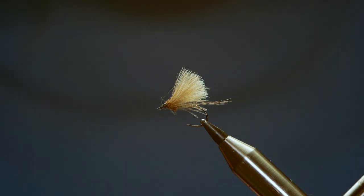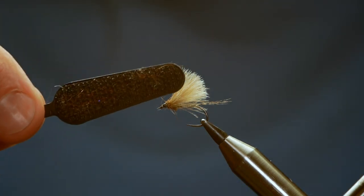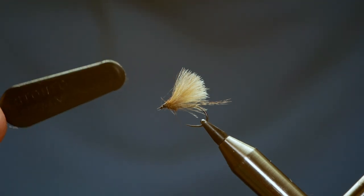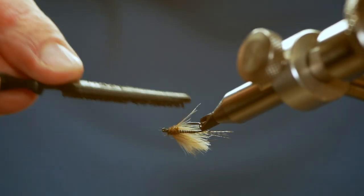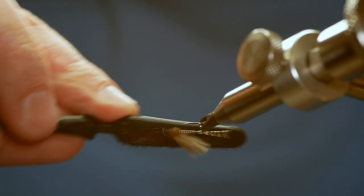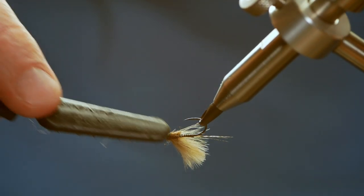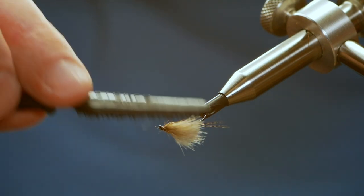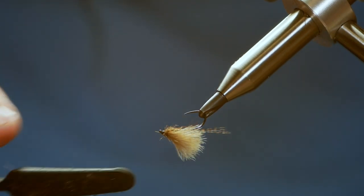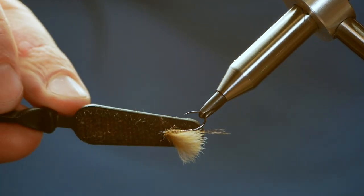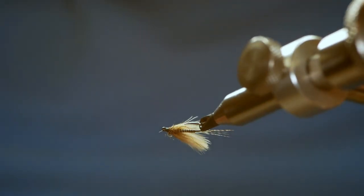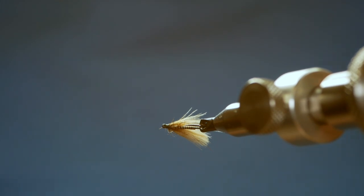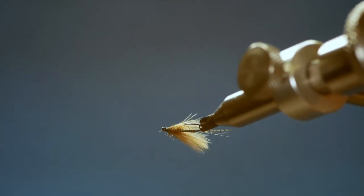Once you're finished, come in with your little dubbing brush and just ever so gently tease out some of that dubbing. It doesn't need to be a lot. Just a little bit. If I show you it side on there, that's the profile the fish are going to see, which is ideal for March brown.